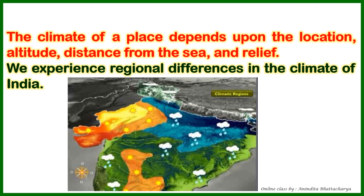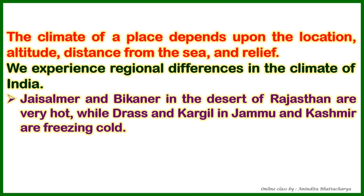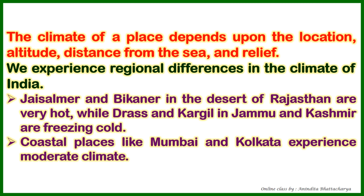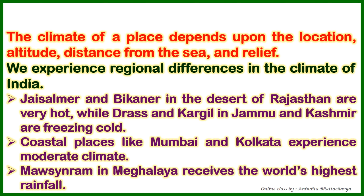We experience regional differences in the climate of India, so we cannot see the same type of climate all over India. Jaisalmer and Bikaner in the desert of Rajasthan are very hot, while Drass, Kargil, and Jammu and Kashmir are freezing cold. Coastal places like Mumbai and Kolkata experience moderate climate, while Mawsynram in Meghalaya receives the world's highest rainfall.